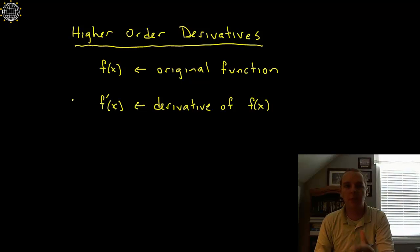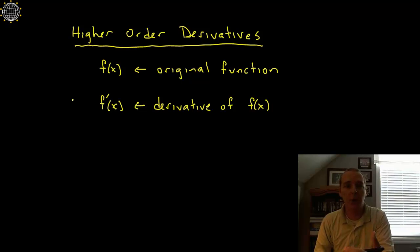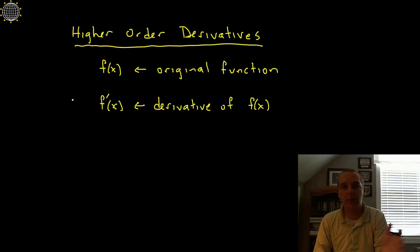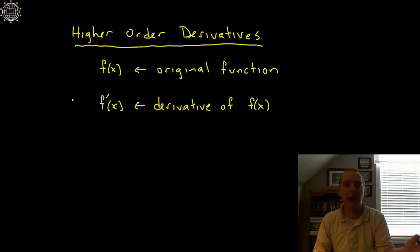Up to this point in the course we should be pretty comfortable with the idea of a derivative. We know what derivatives do and how to find them. We know that derivatives give you the slope of a function at a particular point, but it turns out we can actually go farther than taking one derivative. These are called higher order derivatives.